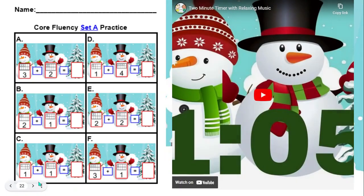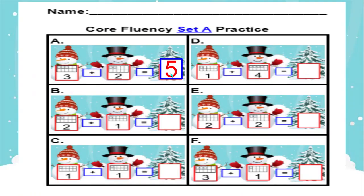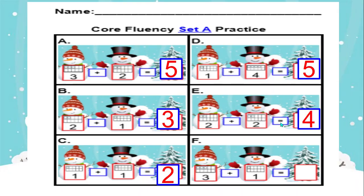Okay, boys and girls, take out a crayon and let's check your work. If you got the answer right, say yes. Three plus two equals five. Two plus one equals three. One plus one equals two. One plus four equals five. Two plus two equals four. Three plus one equals four.